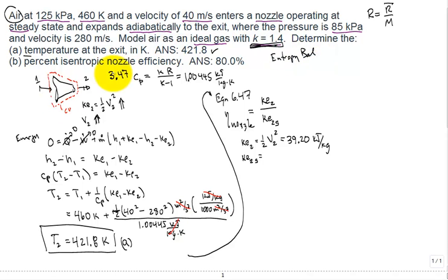For the entropy balance you have steady state, there's no q dot divided by Tb because it's adiabatic, and you have the mass flow rate with the entropy in minus the entropy out plus any irreversibilities leading to the generation of entropy. We just said that that's zero, so s1 is equal to s2.